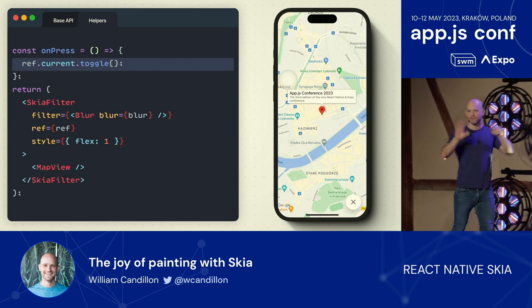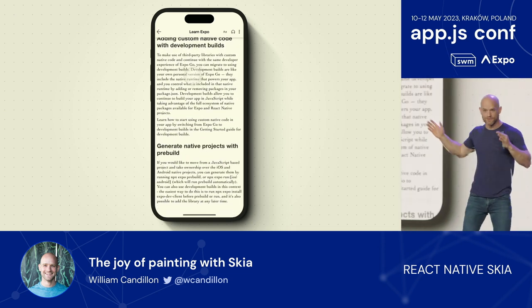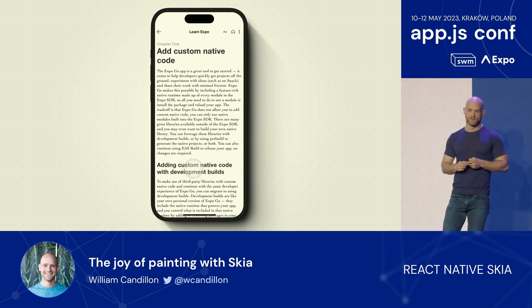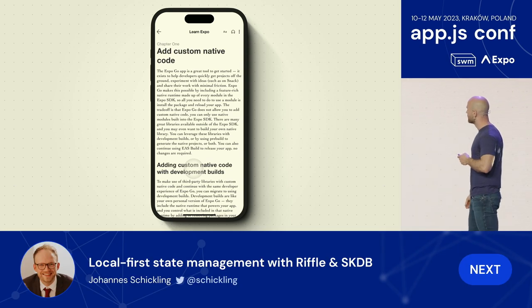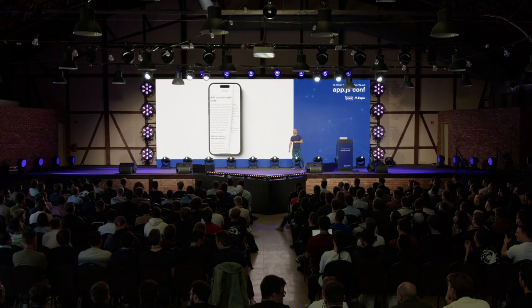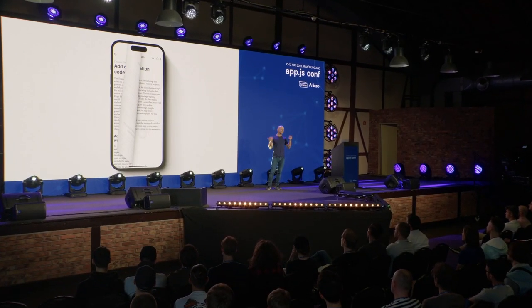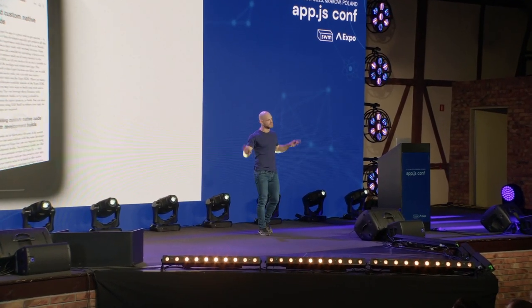But this is about more than just doing backdrop blurs. Here's another example: a completely native app where the text is rendered using React Native Text, with a scroll view and everything. Now I would like to turn the page — maybe we can use a shader and maybe it can look like this. We took a snapshot of the foreground view and the background view, and applied a Skia shader to it using GL transitions. There are thousands of GL transitions available — you can choose any one you like.